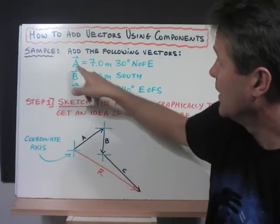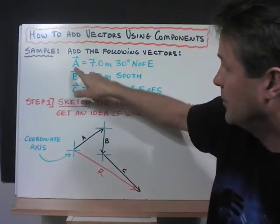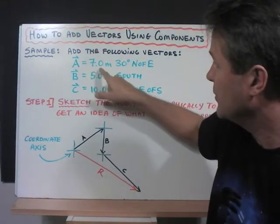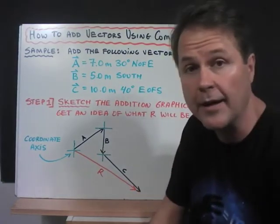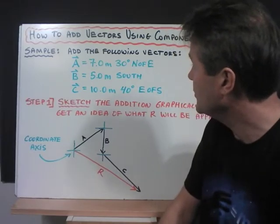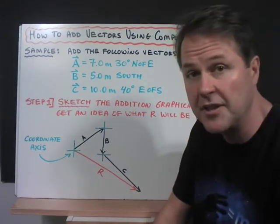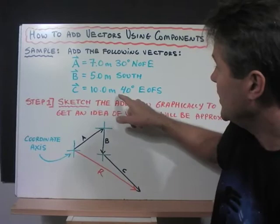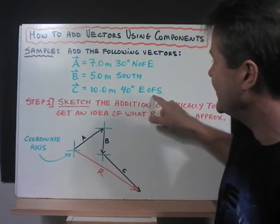Here's a sample question. Add the following vectors: Vector A, 7 meters, 30 degrees north of east. Vector B, 5 meters south. Vector C, 10 meters, 40 degrees east of south.